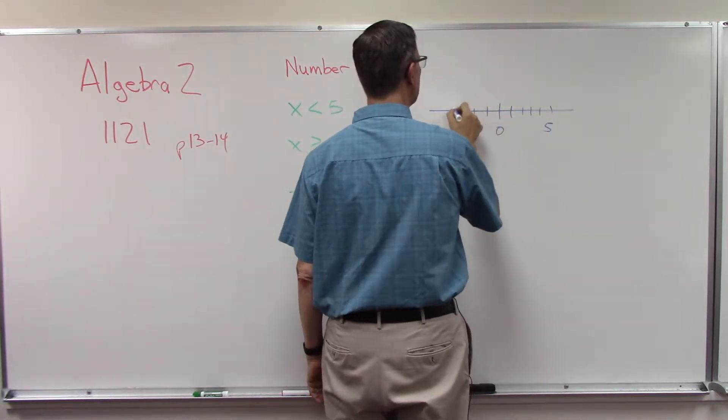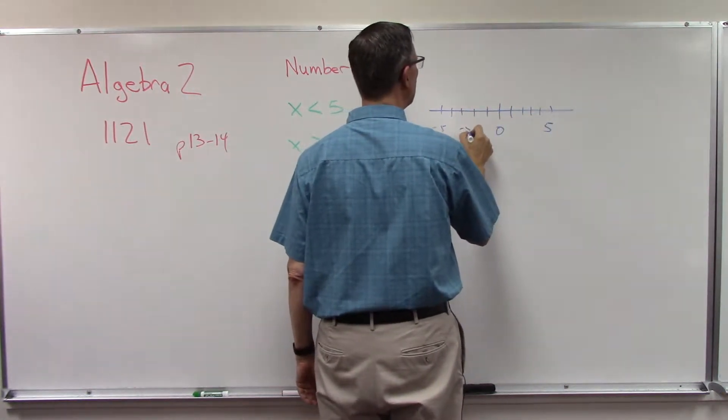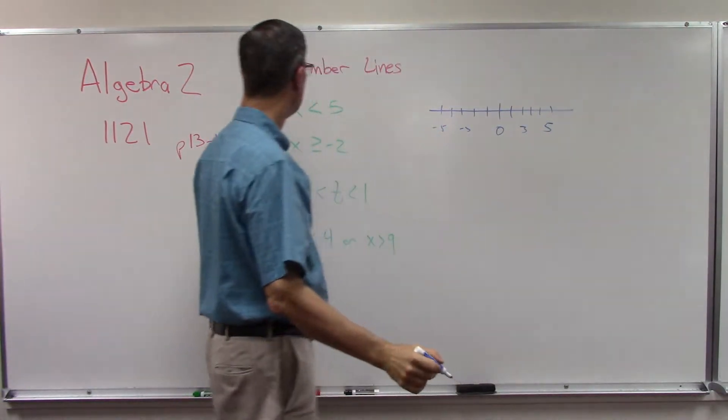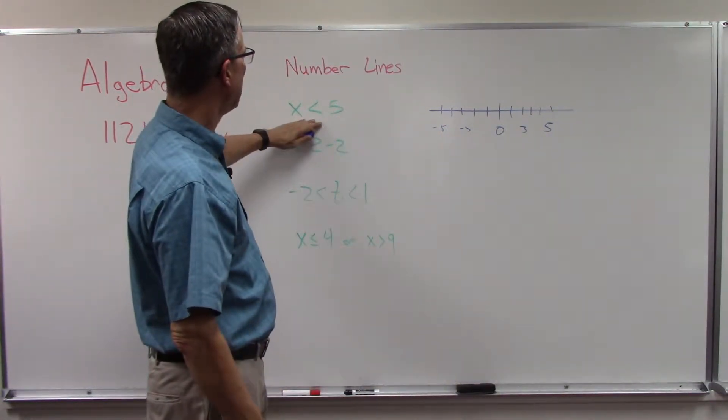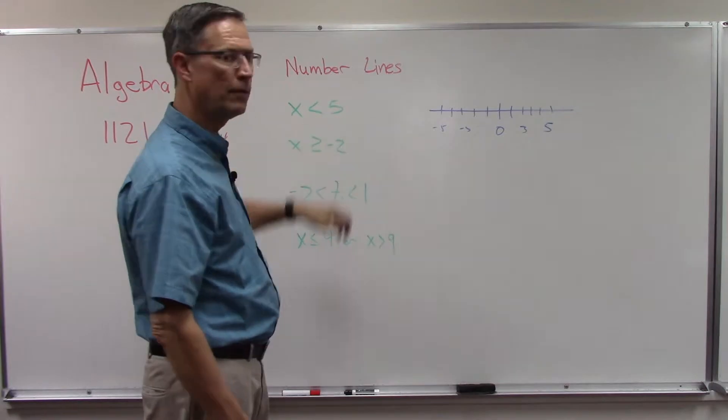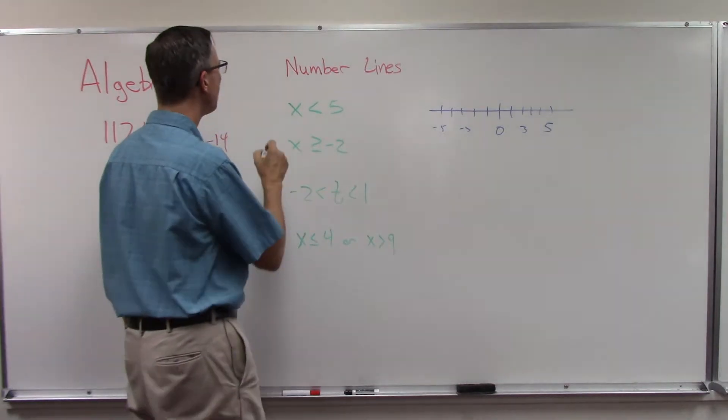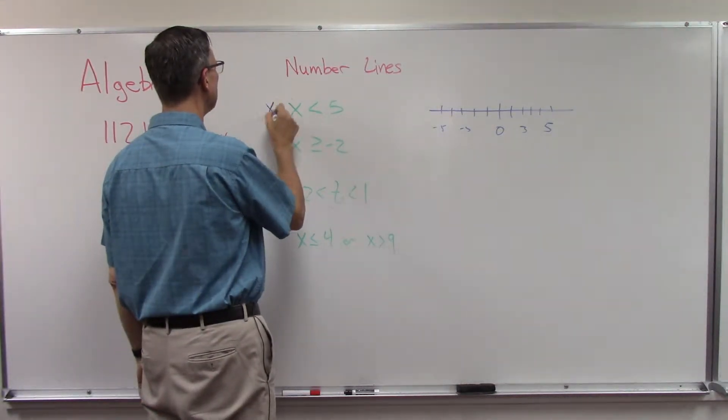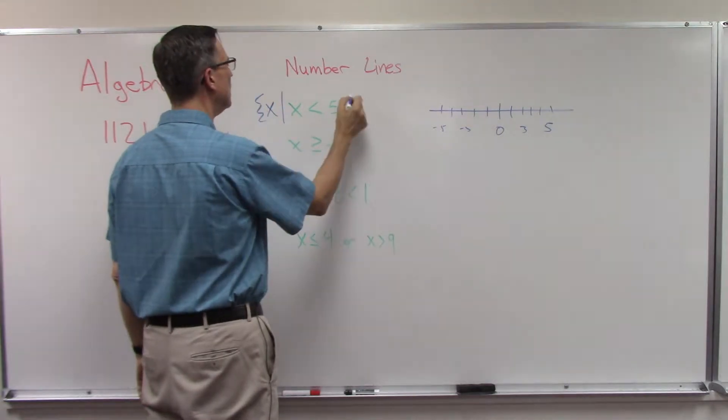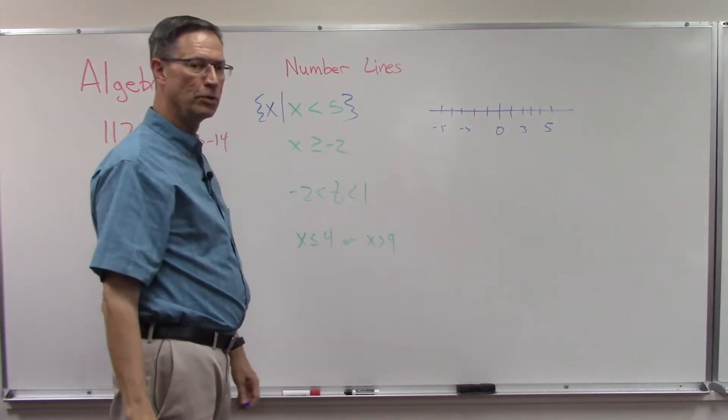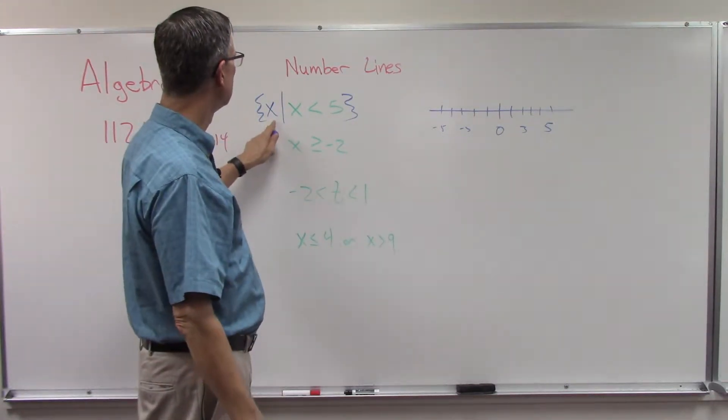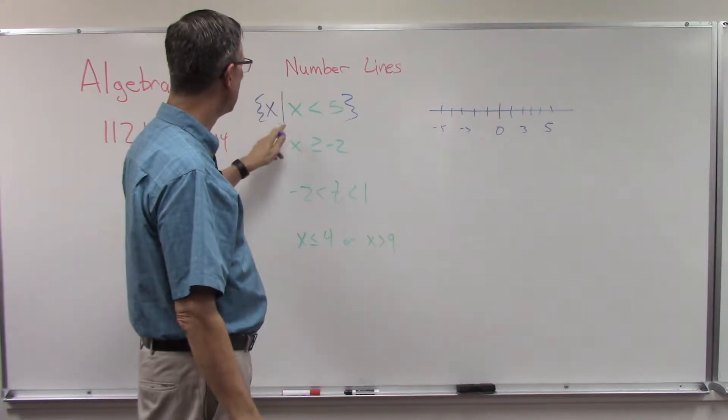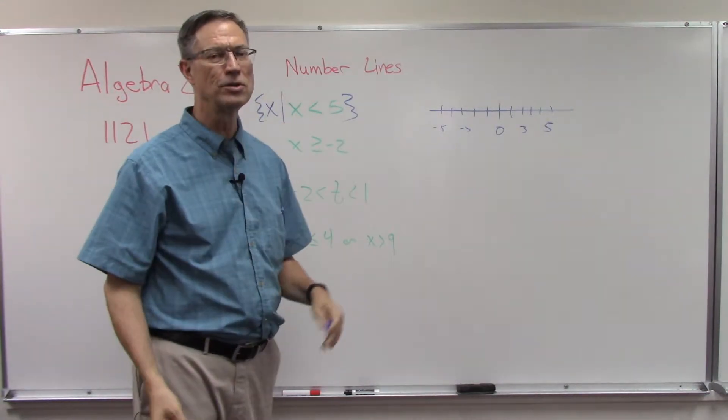So if I'm going to graph x is less than 5, by the way the pace likes to do this, use the symbols where it says x is the set of all numbers such that x is less than 5. It's good terminology to be used to. Some other textbooks just use these symbols and don't add the extras. It just looks a little simpler, but it's the same idea.